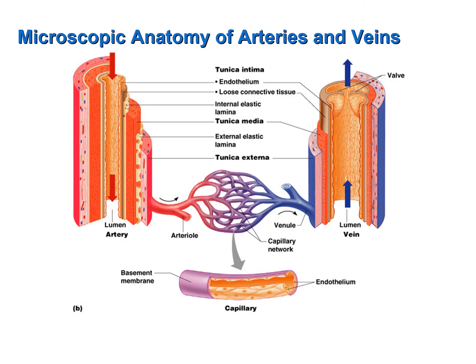We are looking now at the walls of arteries and veins. The walls of these blood vessels consist of three layers or tunics, proceeding from the lumen side out. The innermost tunic is the tunica intima, also referred to as the tunica interna. This is the tunic that's in direct contact with the blood. You have a simple squamous layer of epithelial tissue supported by connective tissue. Notice that you have a layer of elastic tissue in the artery, giving it more elasticity compared to the vein.